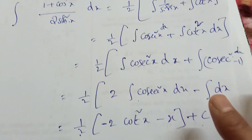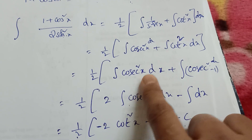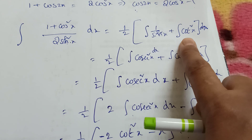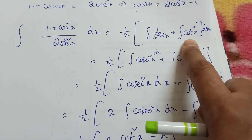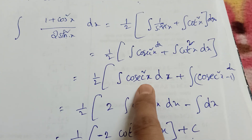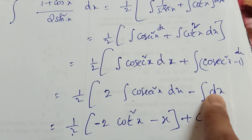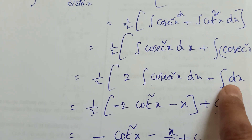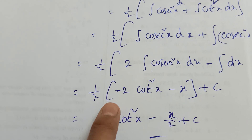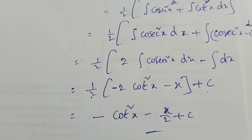For DSC and other exams, write this directly step by step. Since integration of cot²x has no direct formula, convert it using the identity cot²x = cosecant²x - 1. The two cosecant²x terms combine to give 2cosecant²x. Integration of cosecant²x is -cotx, and integration of 1 is x. With the 1/2 factor outside, the answer is -cotx - x/2 + c. Very easy!